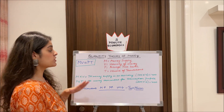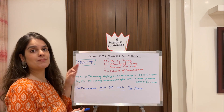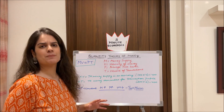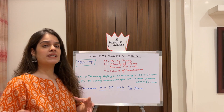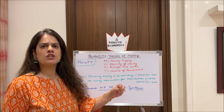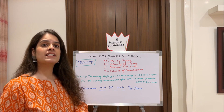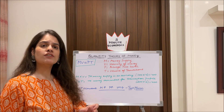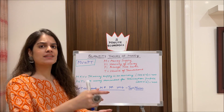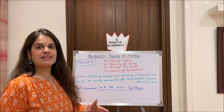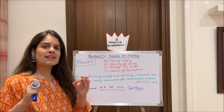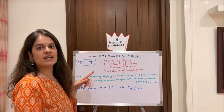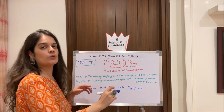The equation MV = PT is the crux of Fisher's approach. M stands for money supply — the money in circulation. V is the velocity of money — the number of times money exchanges hands in an economy. For example, a 100-rupee note is given to someone, they buy something, pass it on, and so on; that frequency of circulation is velocity. P stands for the average price level in the economy, and T stands for the volume of transactions occurring in the economy.